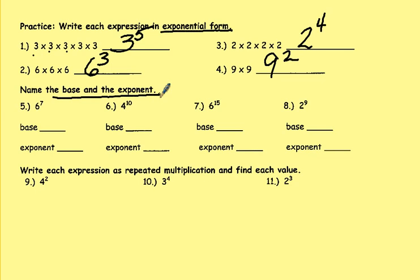Name the base and the exponent. So again, they're not asking you to work it. They're just making sure you know your vocabulary. The big one is your base. The little one is your exponent. Write each expression as repeated multiplication. That's another way to say extended form. And find the value. That's another word for standard form. So 4 squared would be 4 times 4. And it did ask you to find the value. So you do need to work it out. It's 16. So this would be repeated multiplication or expanded form. This would be finding the value or the standard form.